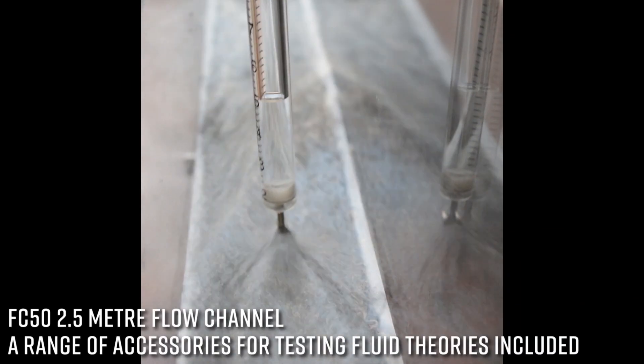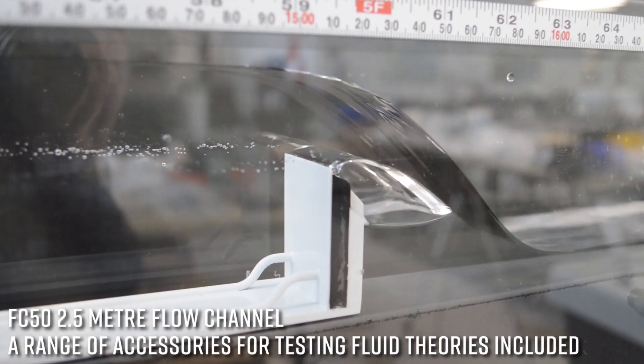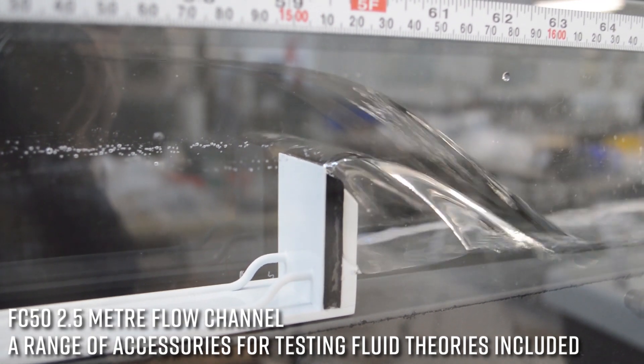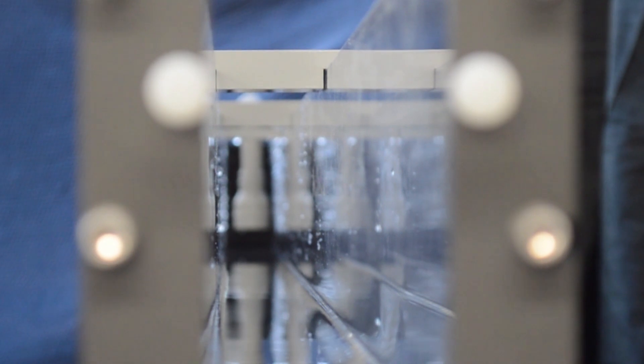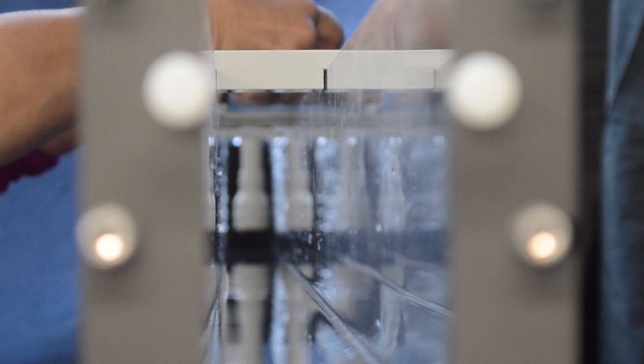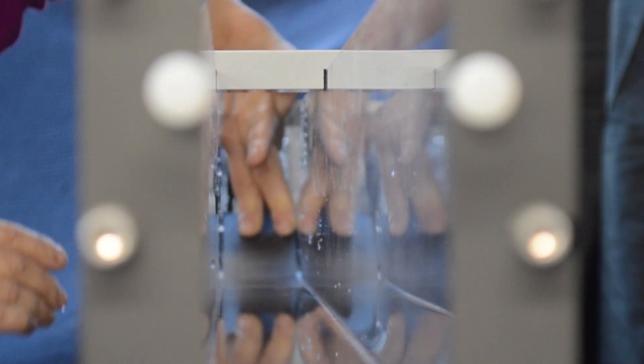Each flow channel comes with a range of accessories for testing different theories including the sharp crested weir that you can see here. This is frequently used for measuring discharge in a channel, in particular the relationship between head over the weir and discharge.